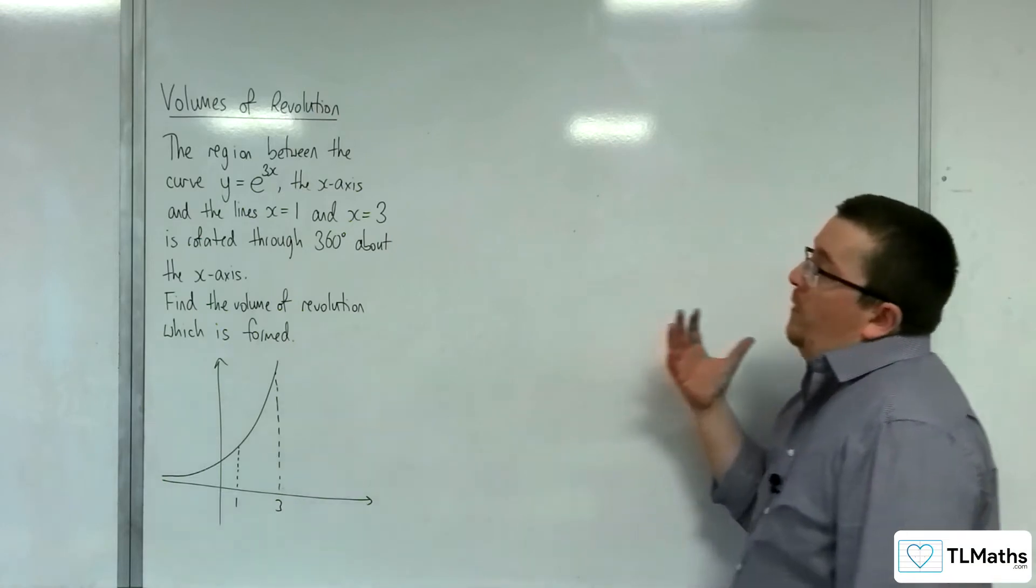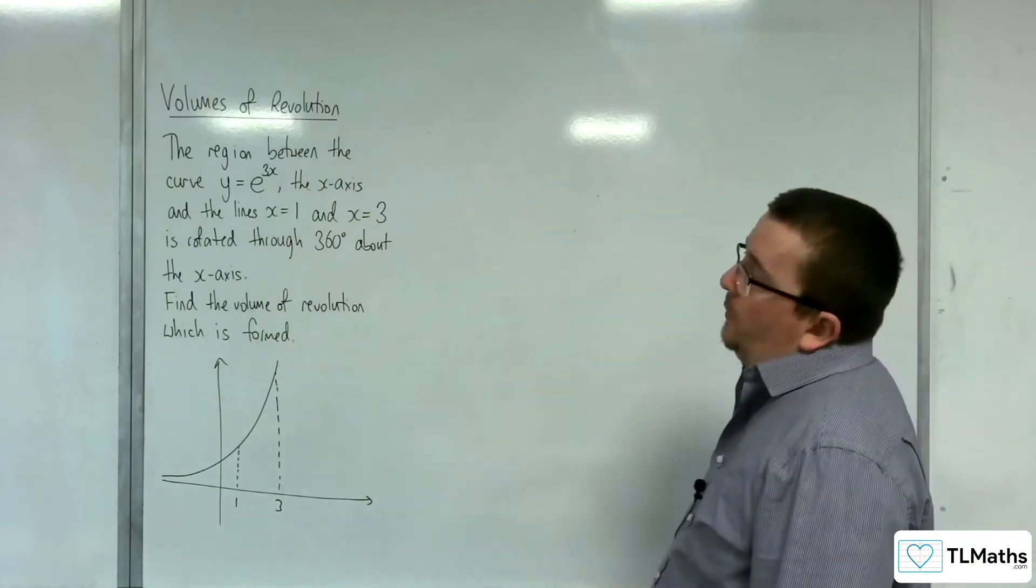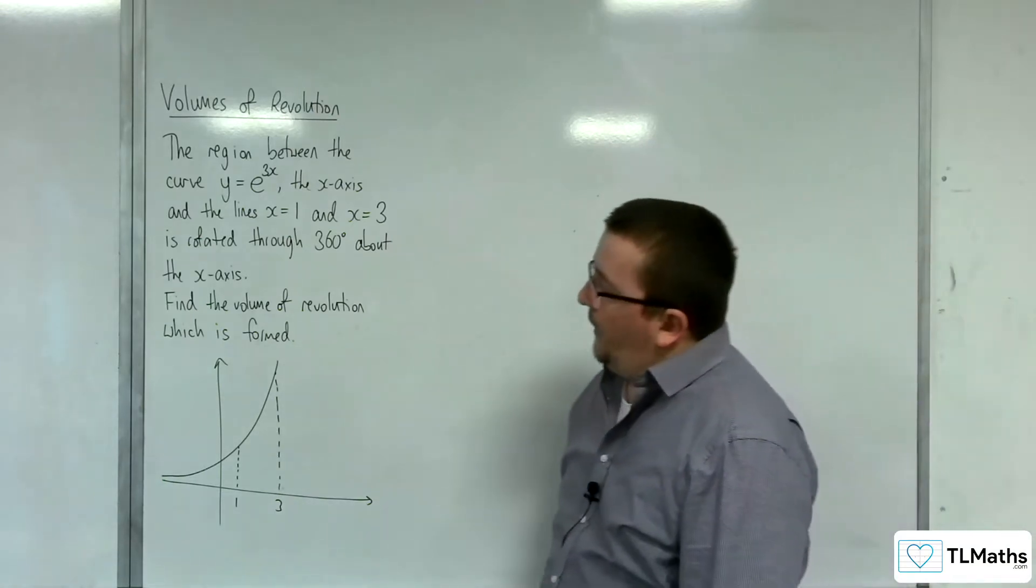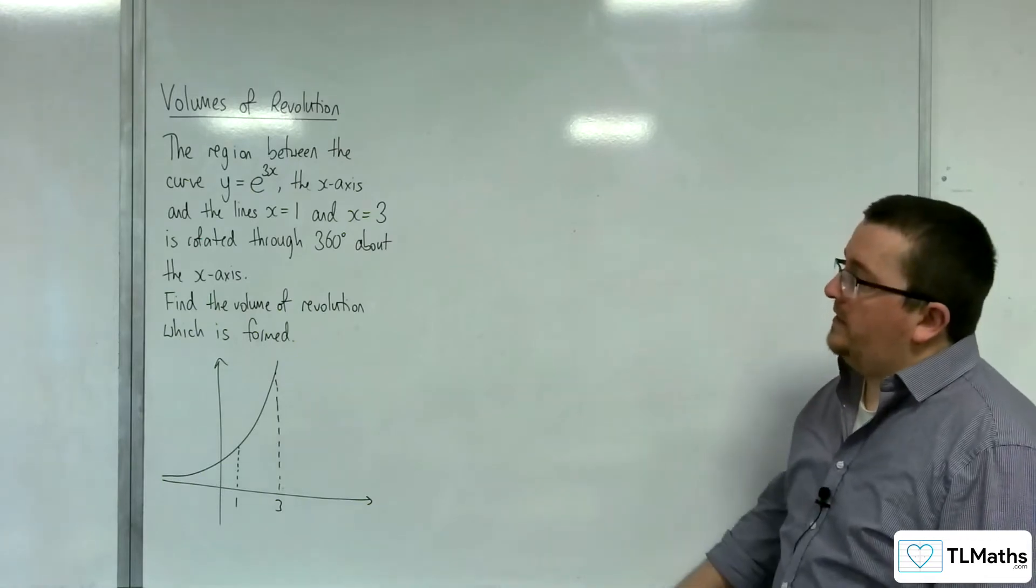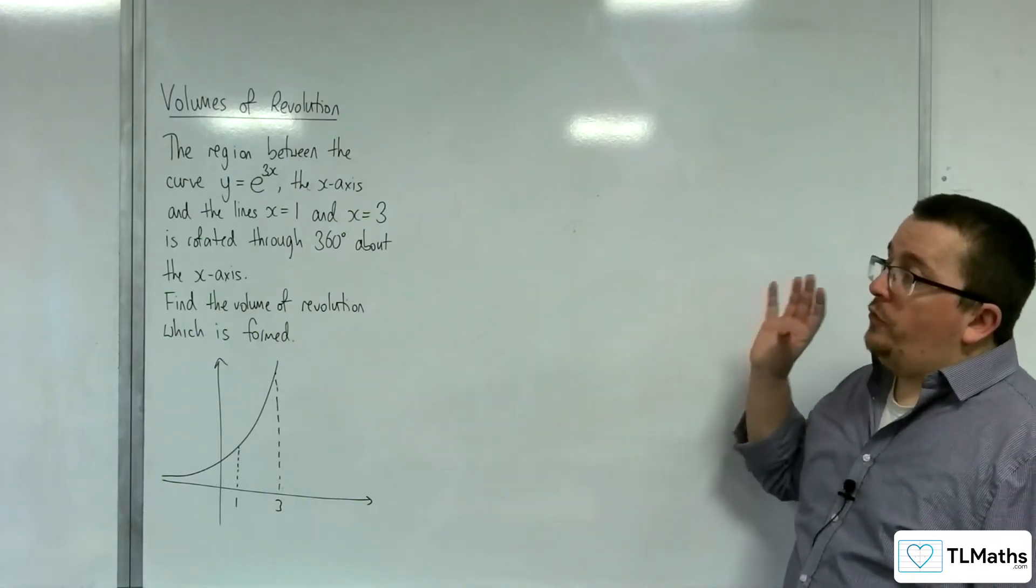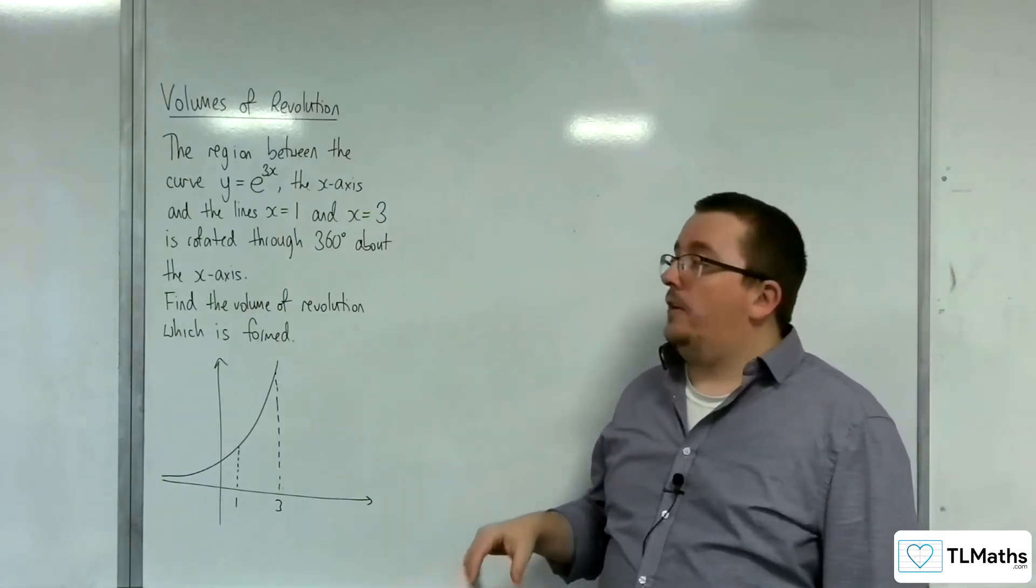In this video, we've got the region between the curve y equals e to the 3x, the x-axis, and the lines x equals 1 and x equals 3, rotated through 360 degrees about the x-axis.